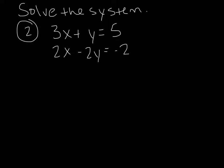Let's try another one. So I have the system: 3x plus y equals 5, and 2x minus 2y equals negative 2. We look at our 3 and 2 with our x's, those won't cancel. 1 and negative 2, those aren't going to cancel. So again, you choose. You can get rid of the x's or the y's.